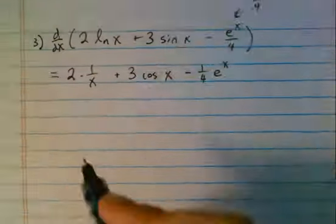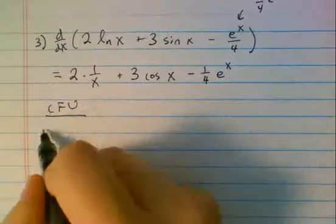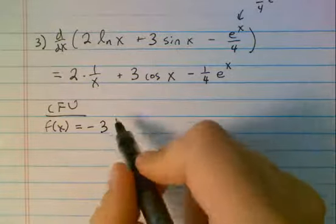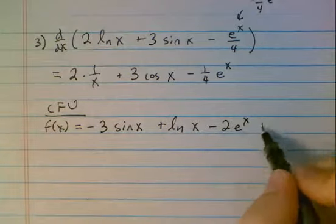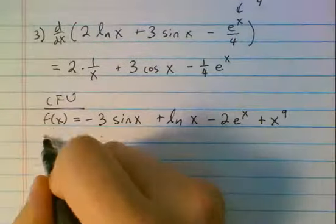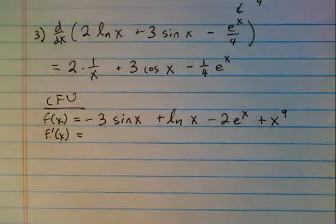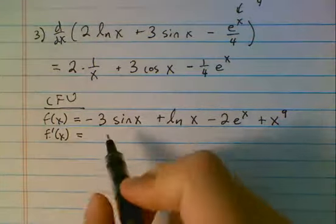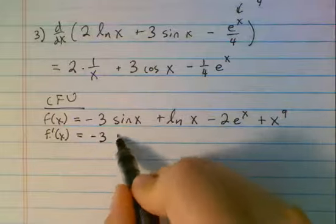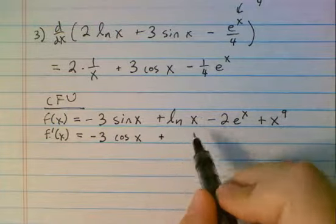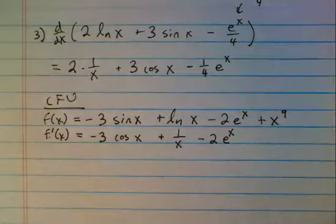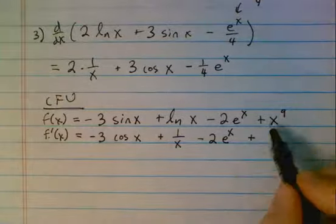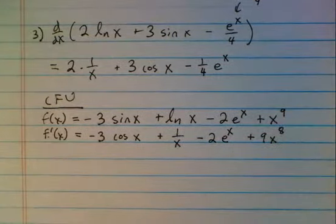Let's do a check for understanding problem and then we're all done. If f of x equals negative 3 times the sine of x, plus the natural log of x, minus 2e to the x, plus x to the 9th, find the derivative of f of x. Pause the video now. The negative 3 is along for the ride — derivative of sine is cosine of x. Derivative of natural log is 1 over x. Negative 2 is along for the ride — derivative of e to the x is e to the x. The final one uses our power rule: bring down the exponent, subtract 1 from the exponent. That concludes the notes for derivatives 3.